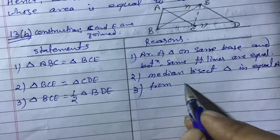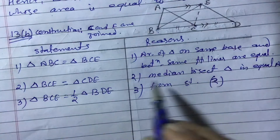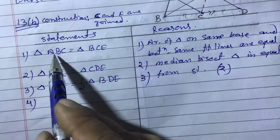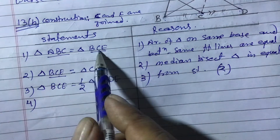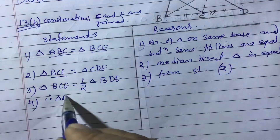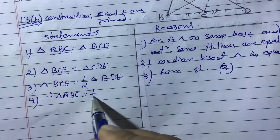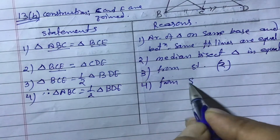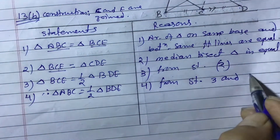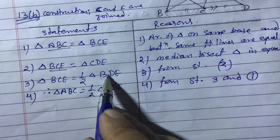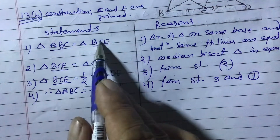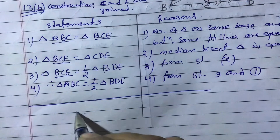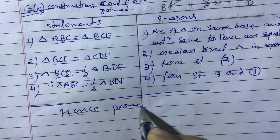This comes from statement two. Statement four: From statement one, triangle ABC equals triangle BCE; and from statement three, triangle BCE equals half of triangle BDE. Replacing BCE with ABC, we get: therefore triangle ABC equals half of triangle BDE. This is derived from statements three and one combined — BCE has been replaced by ABC. Hence proved. Thank you for watching this video.